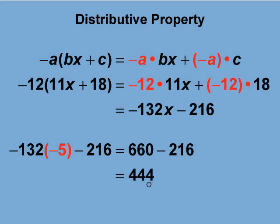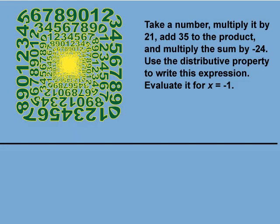Let's look at a final example. Take a number, multiply it by 21, add 35 to the product, and multiply the sum by negative 24. Use the distributive property to write this expression and evaluate it for x equals negative 1. This is a final example of converting words into an algebraic expression.